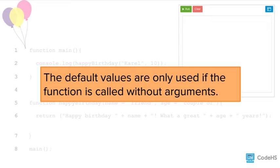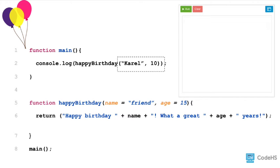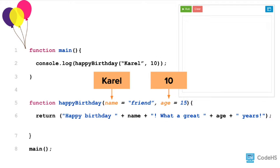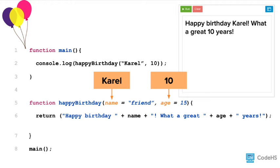An important note: the default values will only be used if the function is called without any arguments. Any arguments that are used will override those default values. So now let's call the happy birthday function with the arguments of Carol and 10 again. Even though we have default values, the arguments we passed in override these values so that name is assigned Carol and age is assigned 10. What's printed to the console is: happy birthday Carol, what a great 10 years.